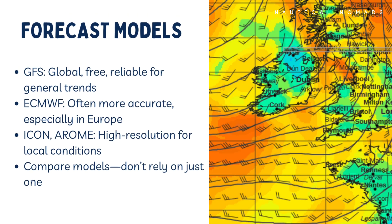It's also worth knowing where the data is coming from. Different forecast models produce different results. GFS is global, free, and widely used. ECMWF is often considered more accurate, especially in Europe, though not always free. ICON and Arome offer higher resolution forecasts that can better capture local effects. The key is this: no single model is perfect. Comparing two or three models side by side gives you a much better idea of what to expect.